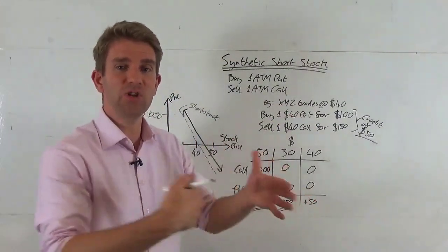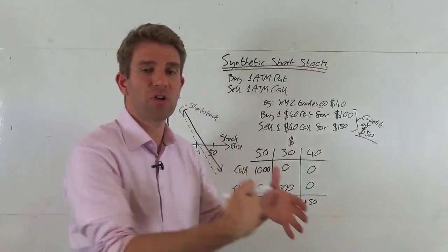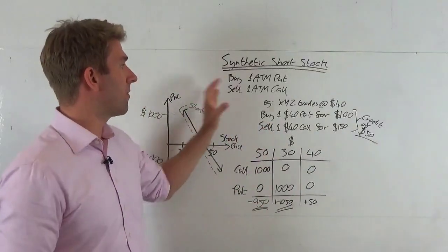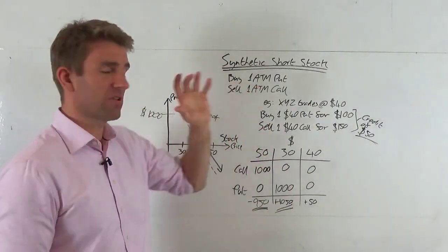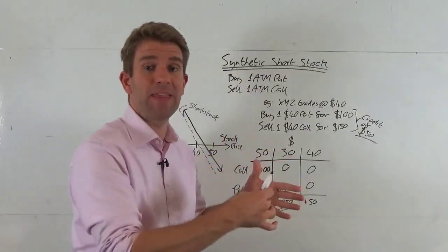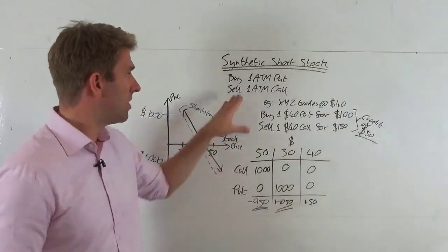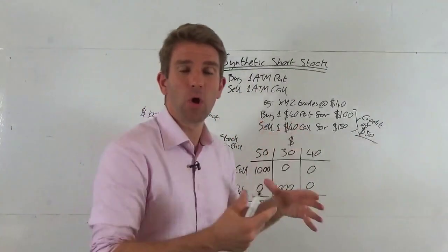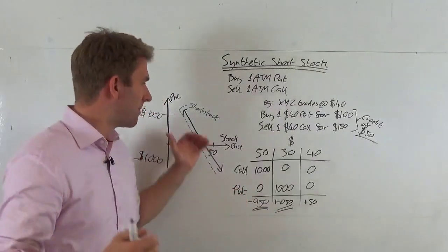If things change and our viewpoints change as the stock starts to move, or perhaps we've got an out of the money put that comes to at the money, then we decide to create a synthetic short by selling the out of the money call to lock that in to make it a linear P&L as we go up and down the stock price.